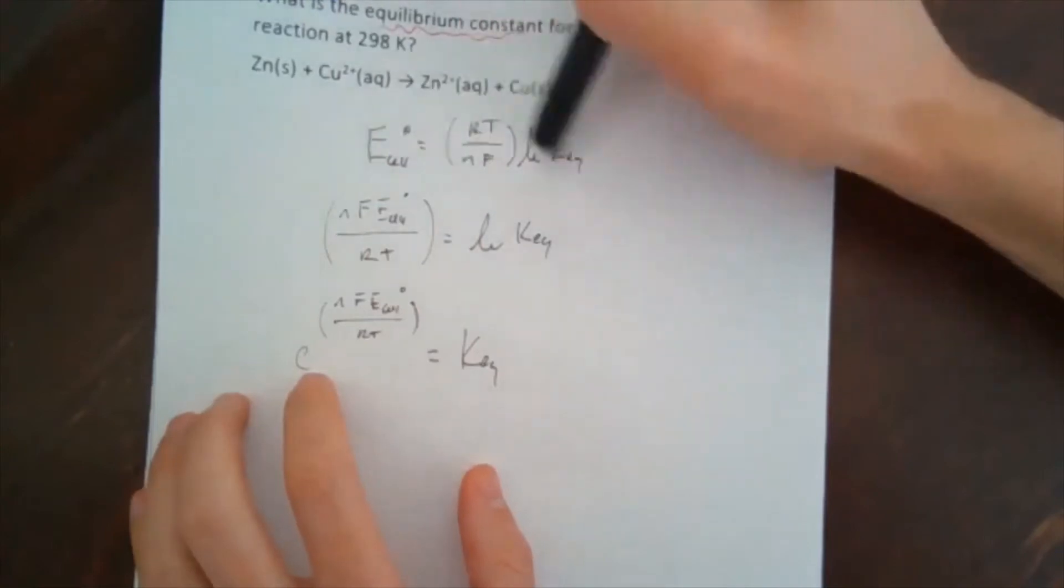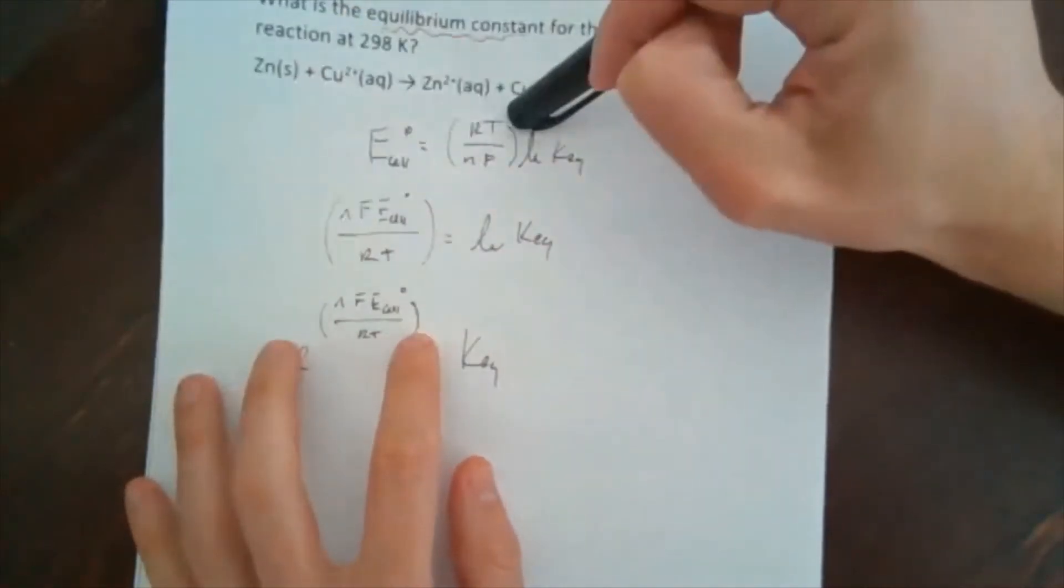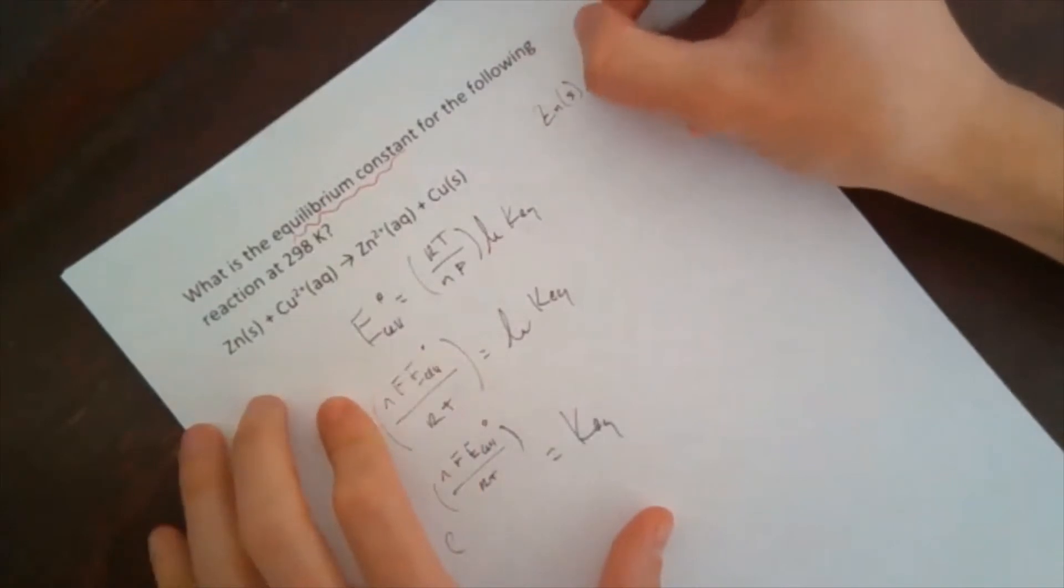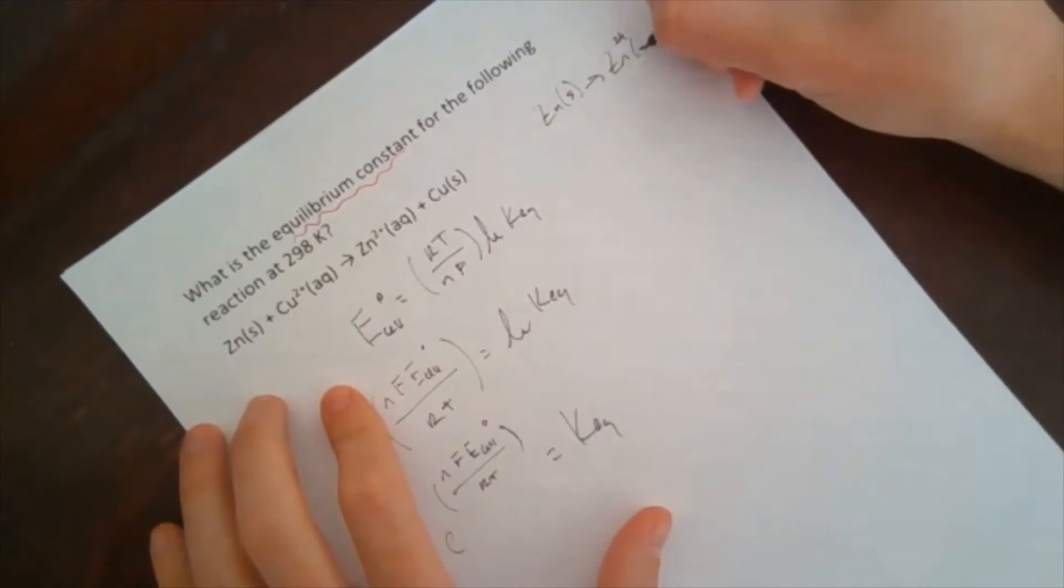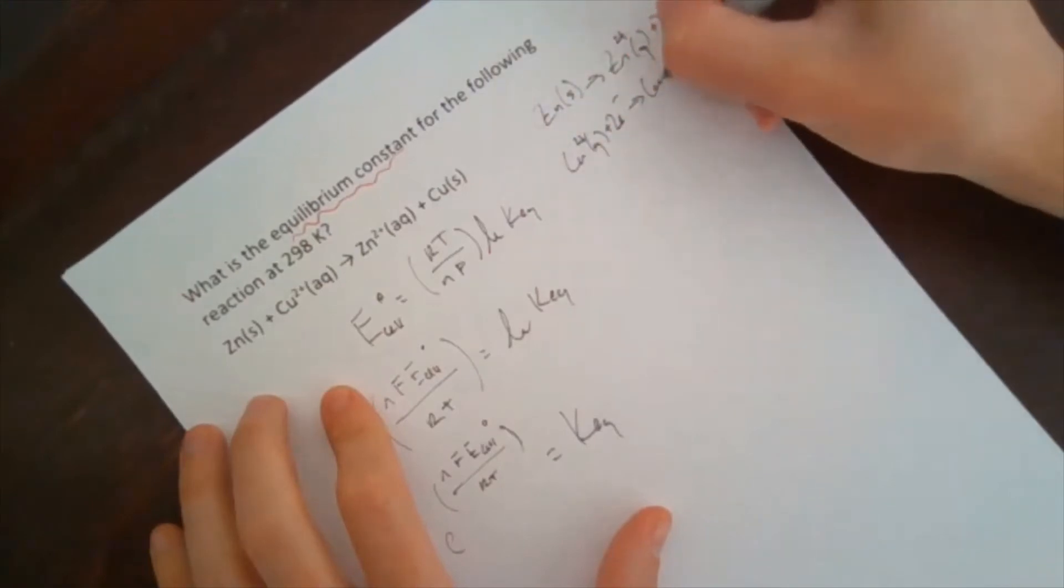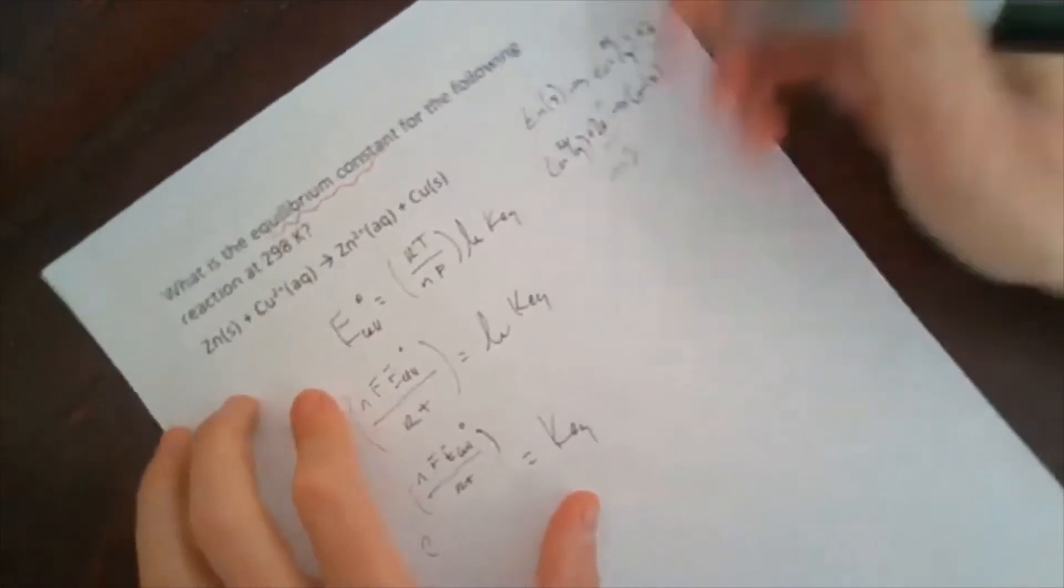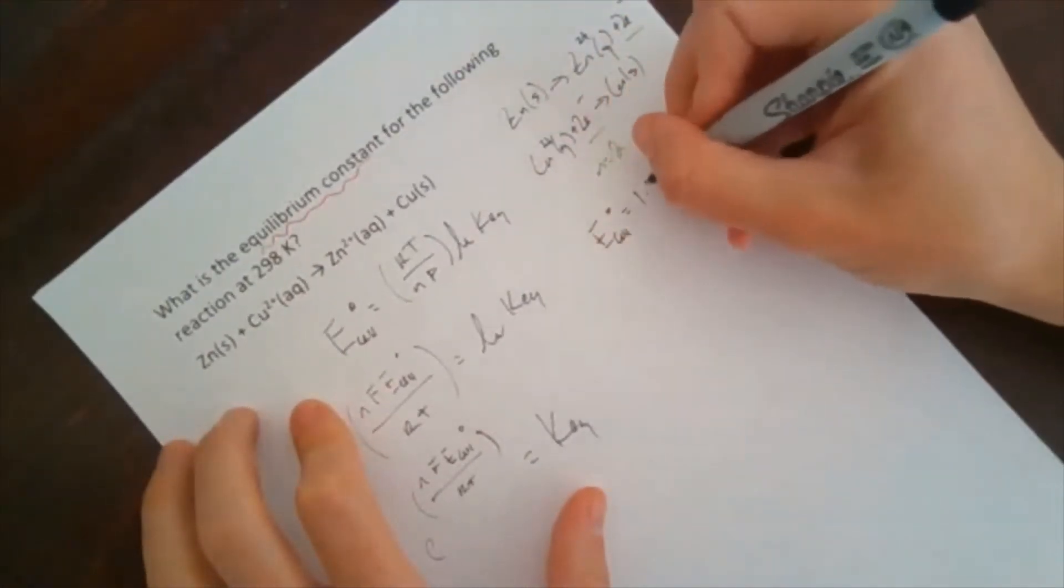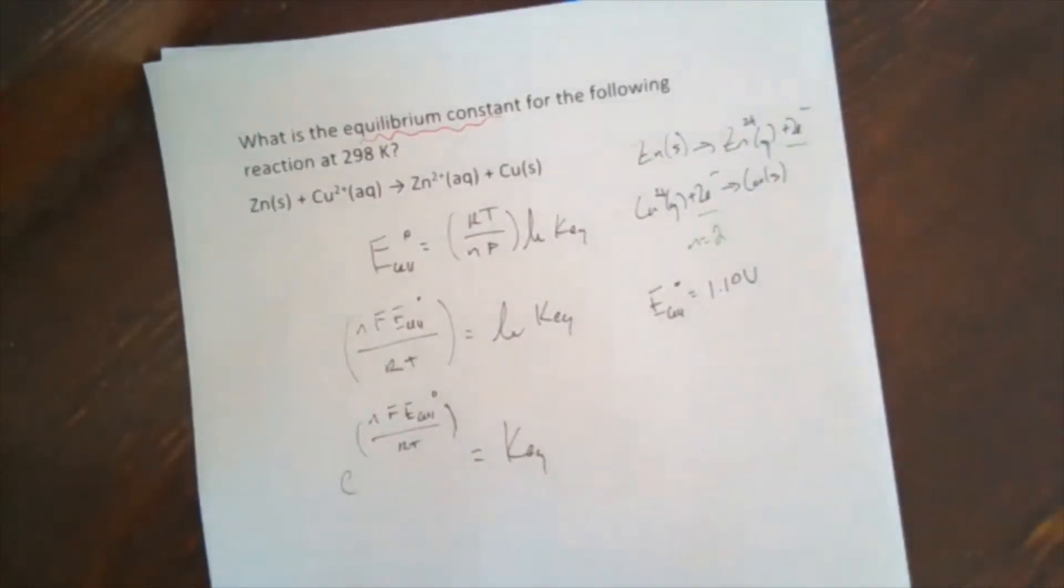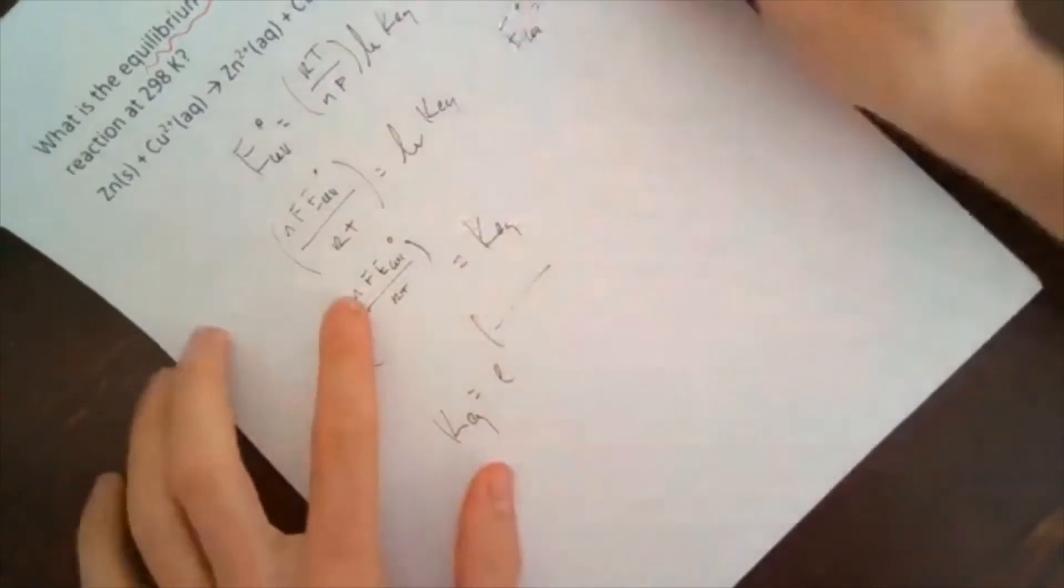So these two equations describe the exact same relationship, the standard cell potential related to the equilibrium constant. And which one you use is just going to be kind of based around if you're given the equilibrium constant, then you use this equation, plug it in to get the cell potential. You have the cell potential, you can plug it into this thing to get the equilibrium constant. So here, because we know our chemistry, we can figure out the cell potential. So we've seen this reaction so far in the Nernst equation analysis. Zn solid oxidizes to Zn²⁺ plus the two electrons, copper 2+ plus the two electrons becomes the copper solid.